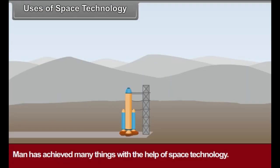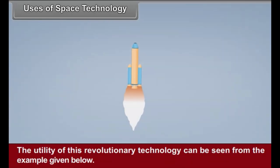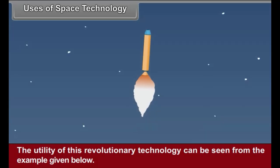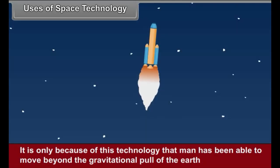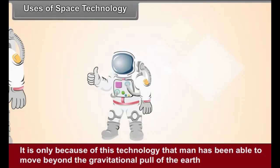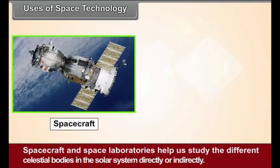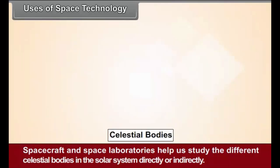Uses of Space Technology: Man has achieved many things with the help of space technology. The utility of this revolutionary technology can be seen from the examples given below. It is only because of this technology that man has been able to move beyond the gravitational pull of the Earth and enter the outer space. Spacecrafts and space laboratories help us study the different celestial bodies in the solar system directly or indirectly.